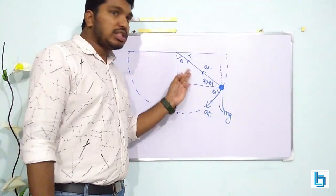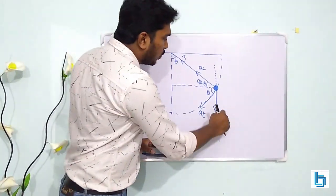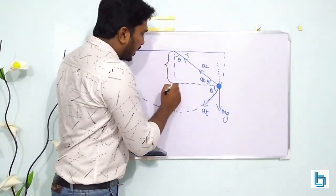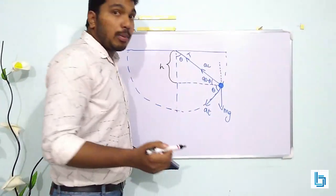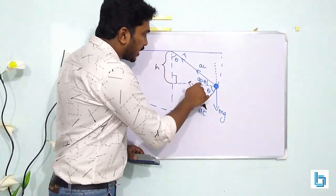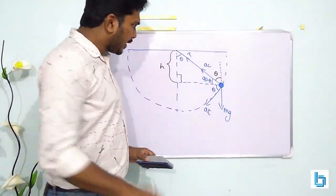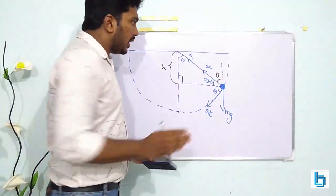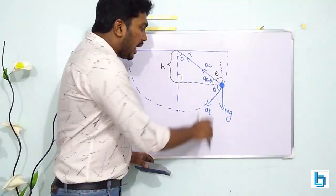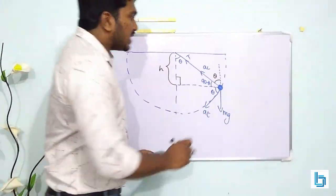I have represented a bob here with mass m, so the weight mg acts downwards and there is a tension. At a particular point making angle theta with the vertical, by geometry the complementary angle is 90 minus theta. AC is the centripetal acceleration directed towards the center, and there is also a tangential acceleration AT, tangent to the path.